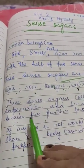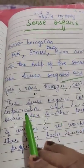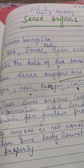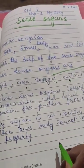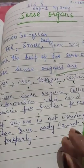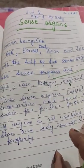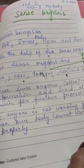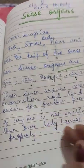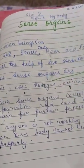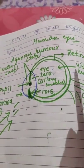All five sense organs collect information and send messages to the brain for further processing, and our body responds to those messages from the brain. If one of the sense organs gets disturbed, our body cannot work properly. So keep all sense organs well, because all sense organs are very important for the functioning of our body.